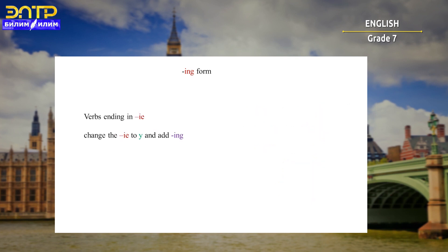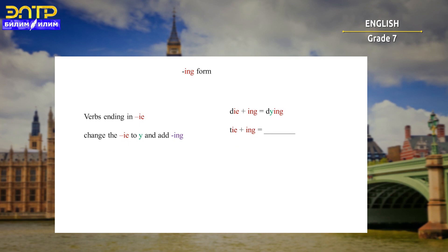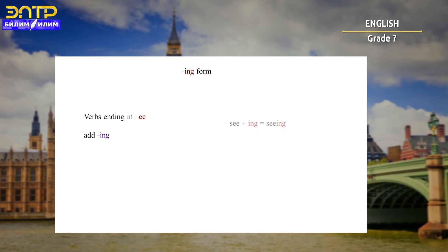The next rule is about verbs ending in I-E. In this case, you need to change the I-E to Y and add ING. For example, 'die' plus ING will become 'dying'. 'Tie' plus ING will be 'tying'. Verbs ending in double E will just need adding ING — for example, 'see' plus ING becomes 'seeing', 'free' plus ING becomes 'freeing'.